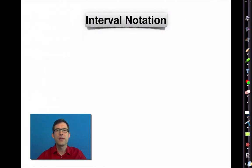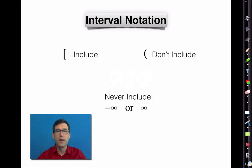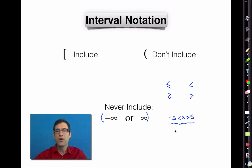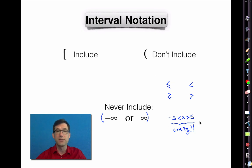Let's summarize interval notation. A bracket means we include that endpoint. A parenthesis means we don't include it. We never ever include negative infinity or positive infinity, so we always use parentheses around those. The advantage is that you don't have to worry about which way inequality symbols are going — a common source of mistakes. With interval notation, all you need to know is where you start, comma, where you stop, and whether to use parentheses or brackets.